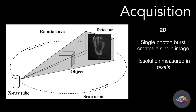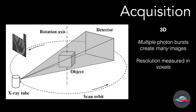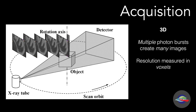This is the exact same technology as a 2D x-ray. So a single photon burst creates a single image, and the resolution of the image is measured in pixels. The main difference in 3D x-rays is that rather than a single photon burst, we have multiple bursts, which create an equal number of images.